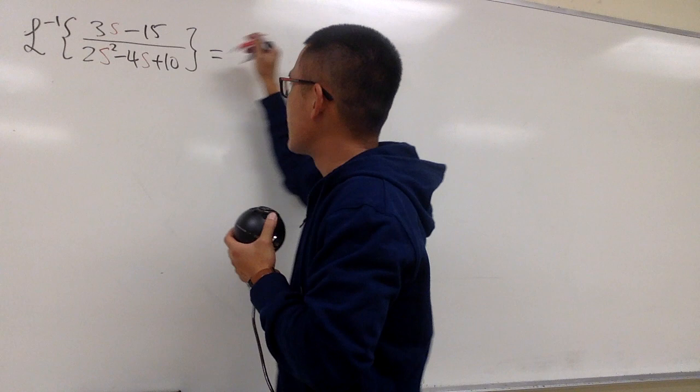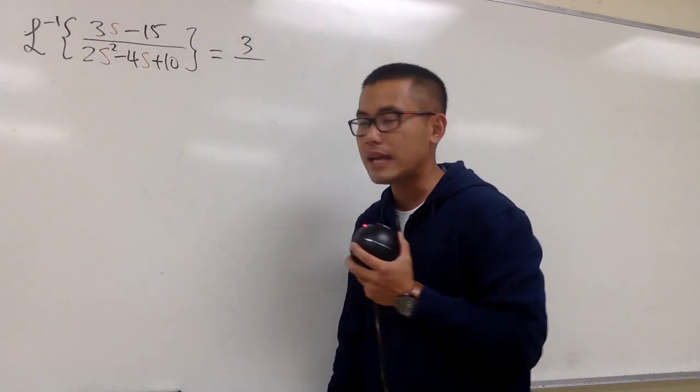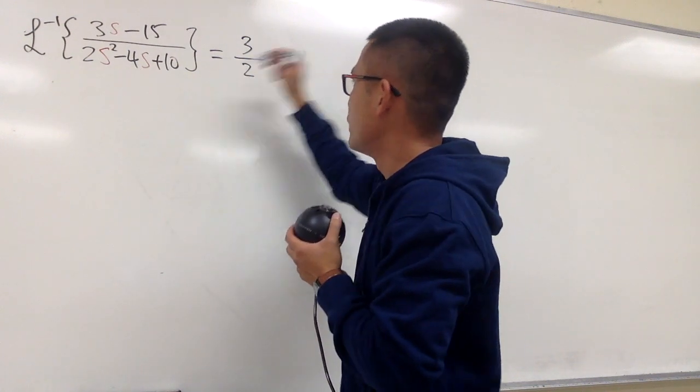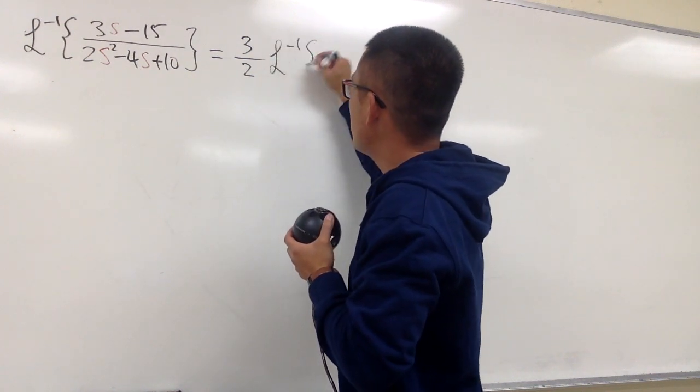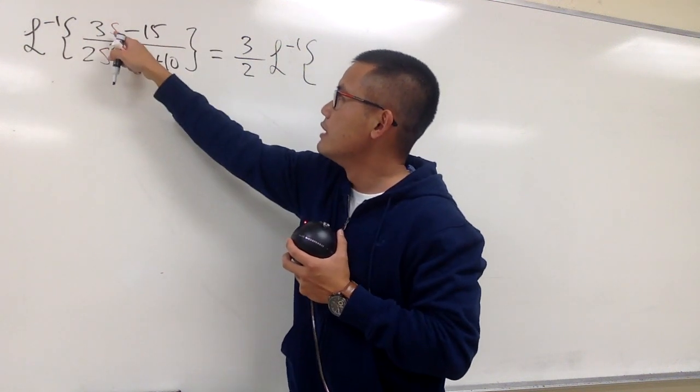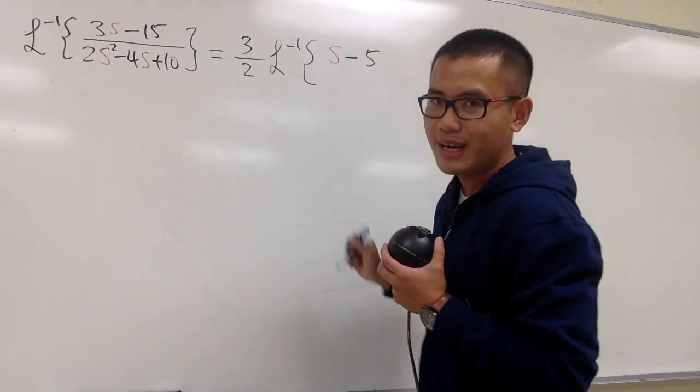So let's go ahead and factor out the 3 on the top, and let's put that all the way in the front of the inverse Laplace sign. And then right here, we have the 2, and let's just factor it out as well. Then we will have the inverse Laplace. On the top, we will have, I factor out the 3, so it will be s minus 5. So this is my s, and now minus this is my 5.